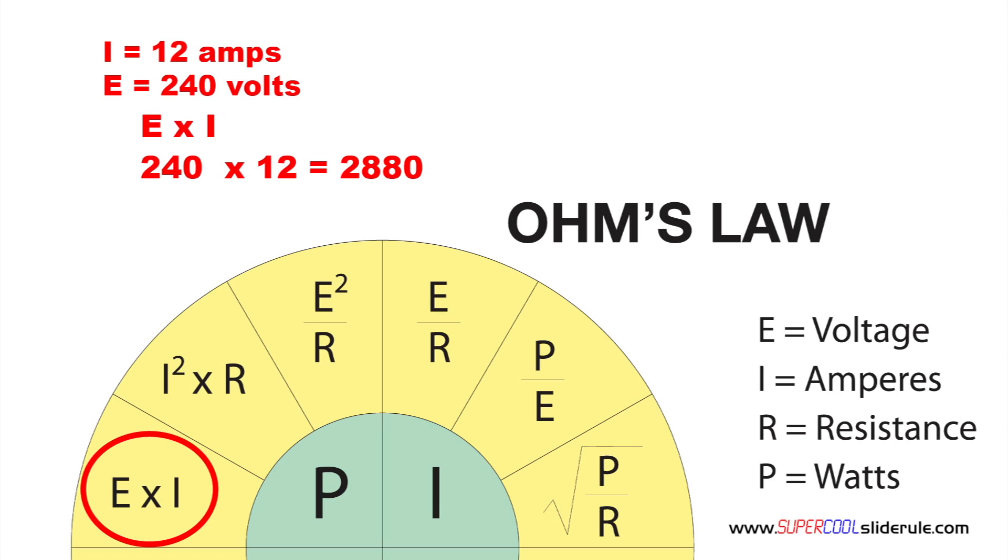Replace the E with voltage of 240. Multiply this by the amps of 12. This gives us 2880. So converting 12 amps at 240 volts is equal to 2880 watts.